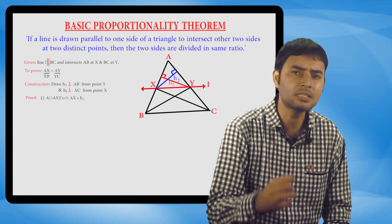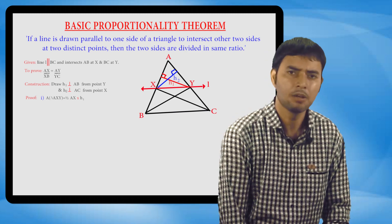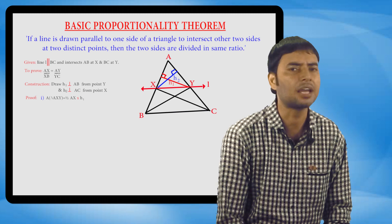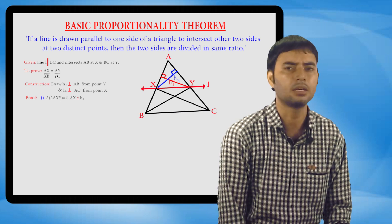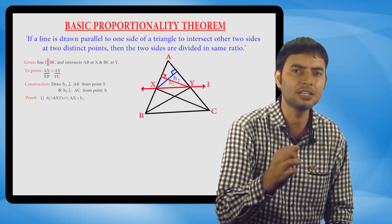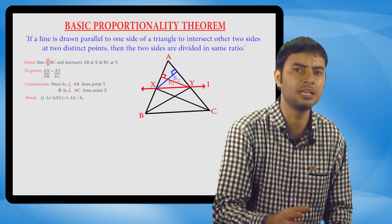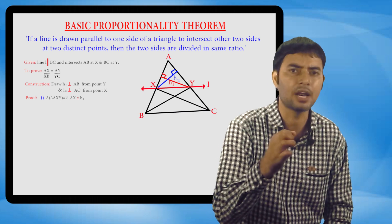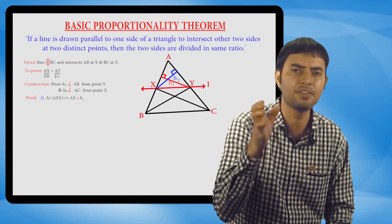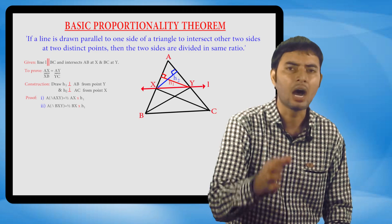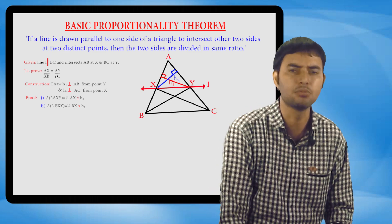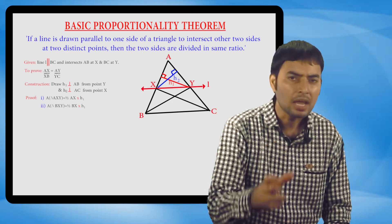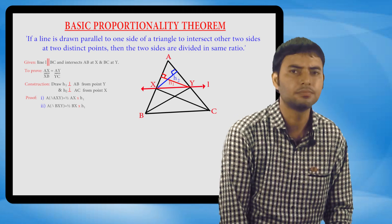Similarly, we will find out the area of triangle BXY. If the base of BXY is XB, then area of triangle BXY will be given by half into XB into H1.